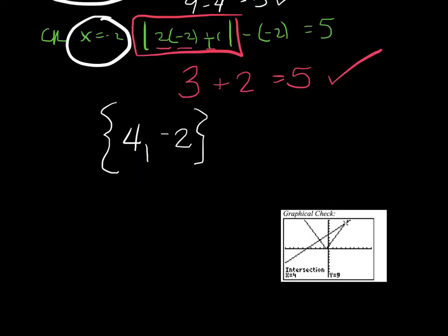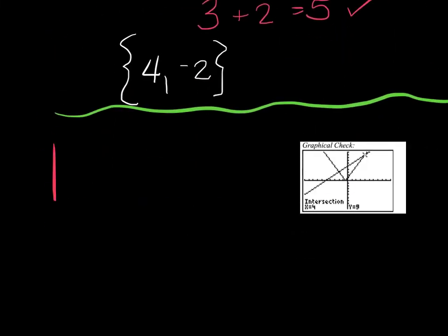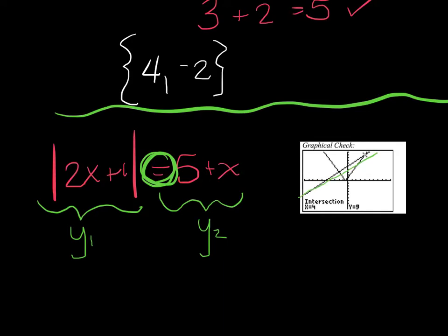Now I want to show you a quick graphical sketch, because I think that's actually easier than checking by hand. Here's how we check graphically: take the equation after isolating — the absolute value of 2x plus 1 equals 5 plus x. Put one side in y1 and the other side in y2. If they are equal to each other, they should intersect. I graphed this, and you can see these two intersect twice — here and here. So I know there are two answers, and both do check.